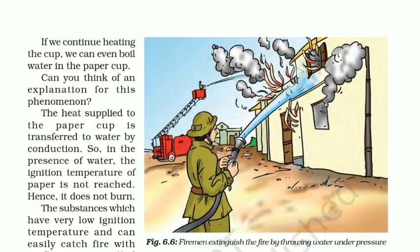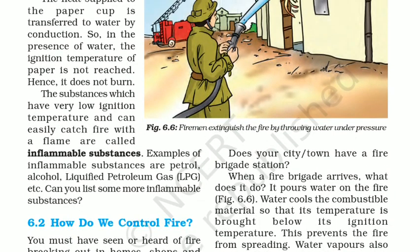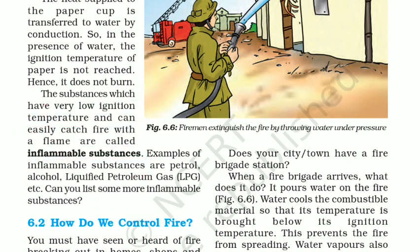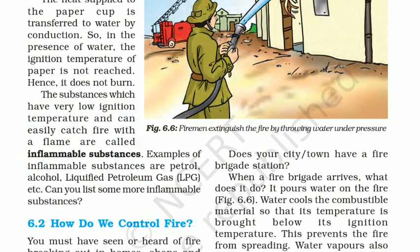Substances which have a low ignition temperature and can easily catch fire with a flame are called inflammable substances. For example, inflammable substances include petrol, alcohol, and liquefied petroleum gas (LPG) etc. These all come under inflammable substances.